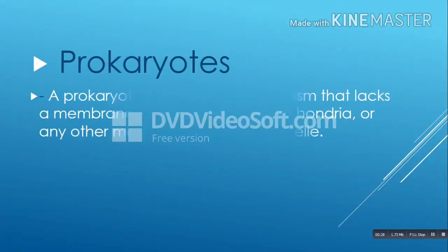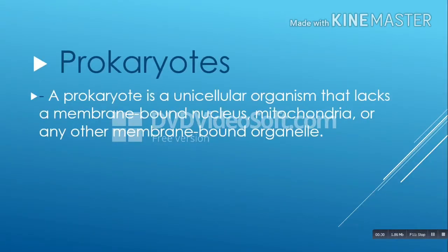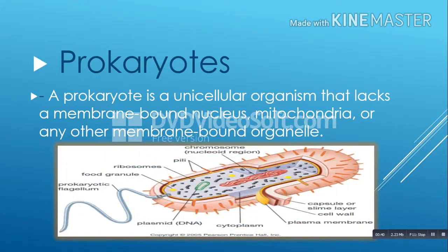Prokaryotes. A prokaryote is a unicellular organism that lacks a membrane-bound nucleus, mitochondria, or any other membrane-bound organelle. Bacteria are classified as prokaryotes along with another group of single-celled organisms, the archaea. Prokaryotes are tiny, but in a very real sense, they dominate the earth.